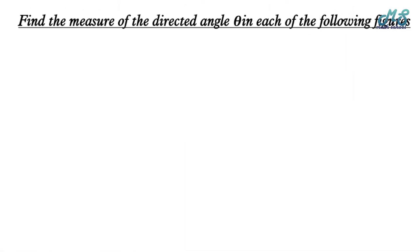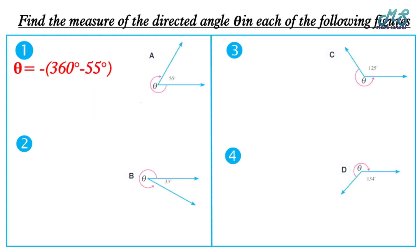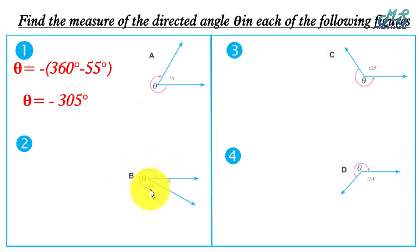Example: find the measure of the directed angle theta. Number one — the direction from initial to terminal is clockwise, so we have a negative measure. Theta equals negative (360° − 55°) = negative 305°. Number two — the direction from initial to terminal side is anti-clockwise, so we have a positive measure. Theta equals 360° − 33° = 327°.